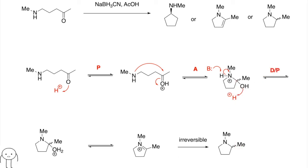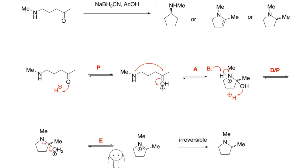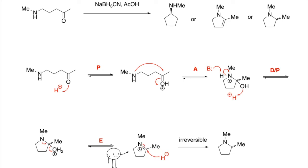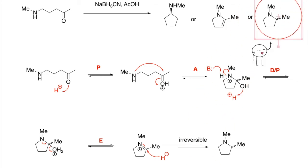Next, an elimination will occur in which the lone pair of electrons on the nitrogen resonate over in order to kick off the water group. Finally, due to the presence of a hydride in this reaction, an irreversible reduction will occur in which the hydride will attack the carbon double bonded to the nitrogen, and the electrons of the double bond will swing back over to the nitrogen to reduce the charge. And this leaves you with your racemic amine product as your answer.